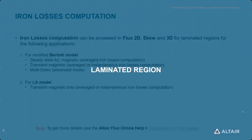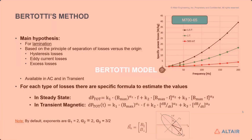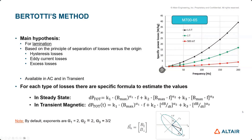For laminated regions, we have two models. The Bertotti model works in all different applications — transient and static. The LS model is only in transient. Both can be used in 2D, skew, and 3D. Focusing on the Bertotti model, this is the main iron loss model you'll find, and it can take different names depending on where you look. We have curves of losses per kilo versus induction and frequency, and this model tries to fit these losses, taking into account hysteresis losses, eddy current losses, and adjusting the value with excess losses. You have three k coefficients and three alpha exponents to quantify the different losses at different frequencies.